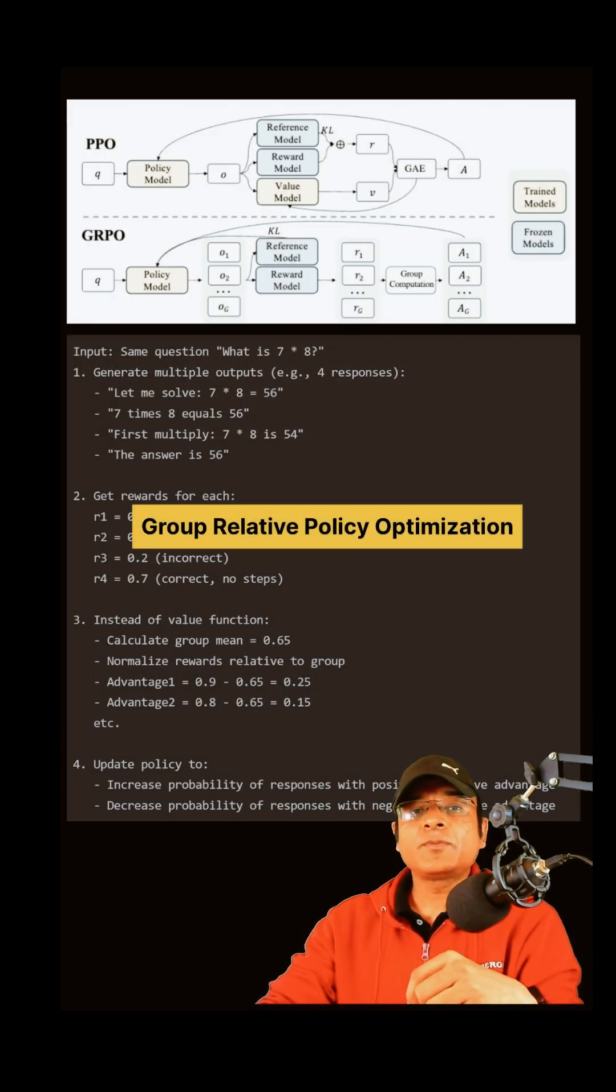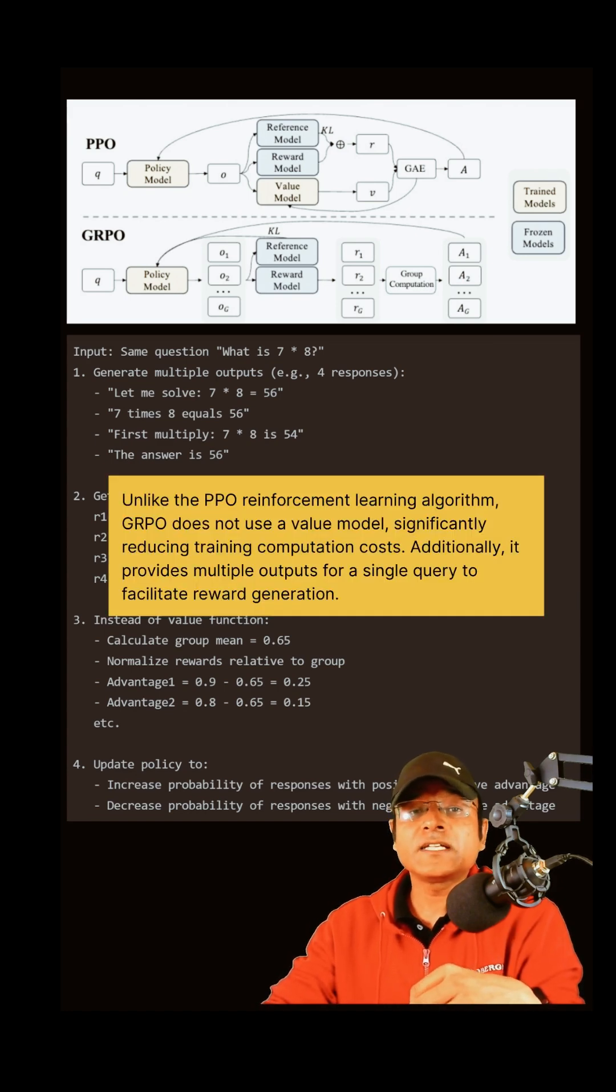So what is GRPO? Group Relative Policy Optimization. It's not a new reinforcement learning algorithm and was used by DeepSeek's math model earlier. It's particularly useful in coding, math, and reasoning type tasks.